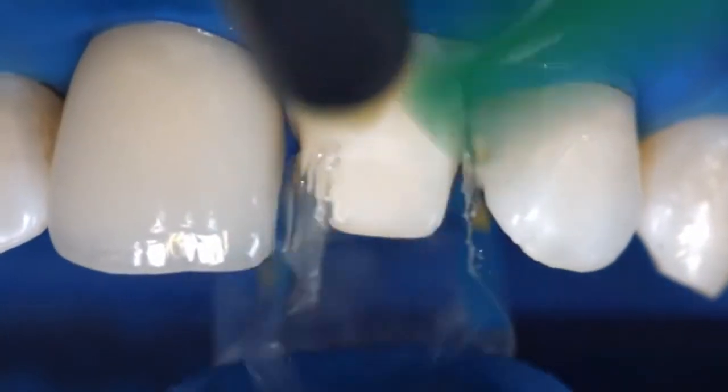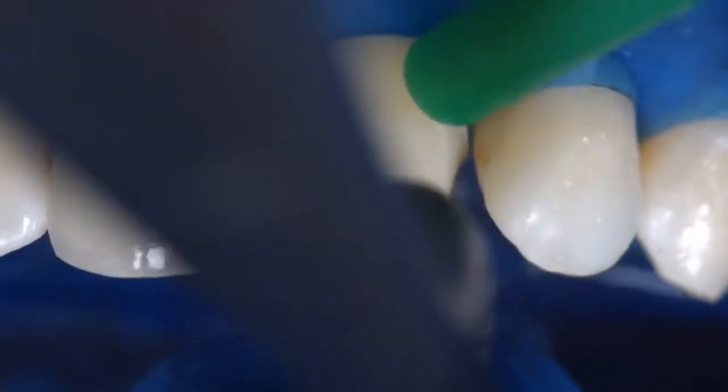Thoroughly rinse off the gel with a vigorous stream of water and air-dry the preparation until the enamel surfaces appear chalky white.